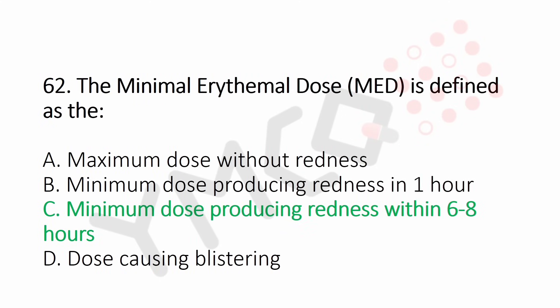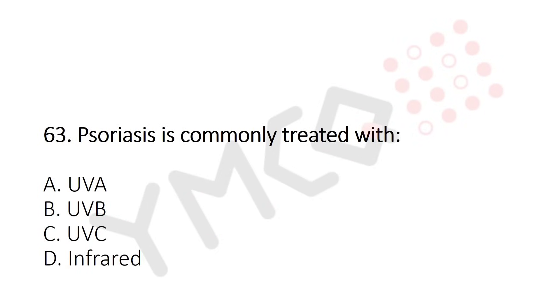Now let's move to question number 63. Which UVR wavelength is used for vitamin D synthesis? Option A, UVA. Option B, UVB. Option C, UVC. Option D, infrared. And the answer is Option B, UVB.